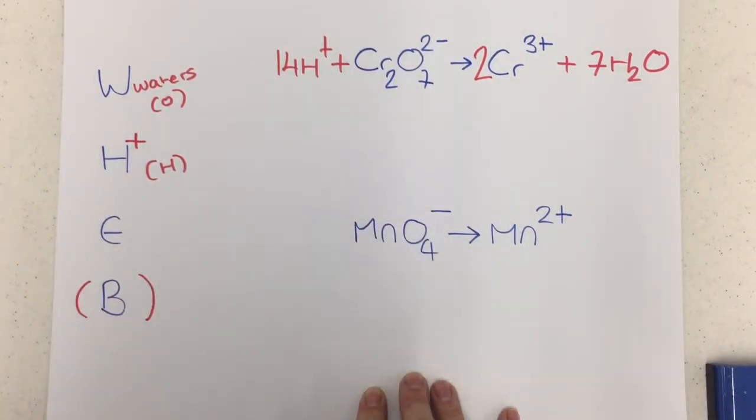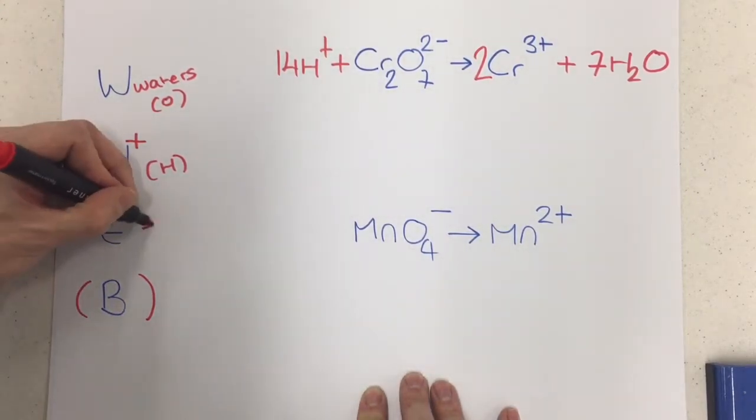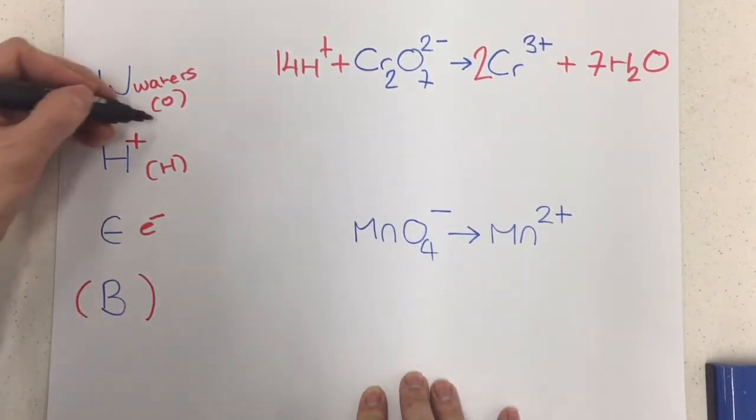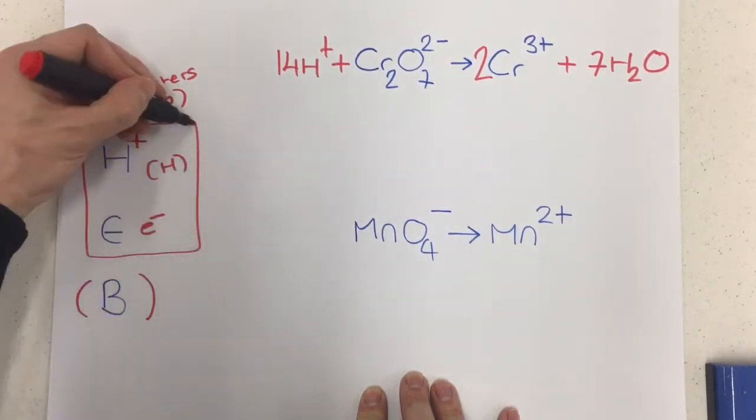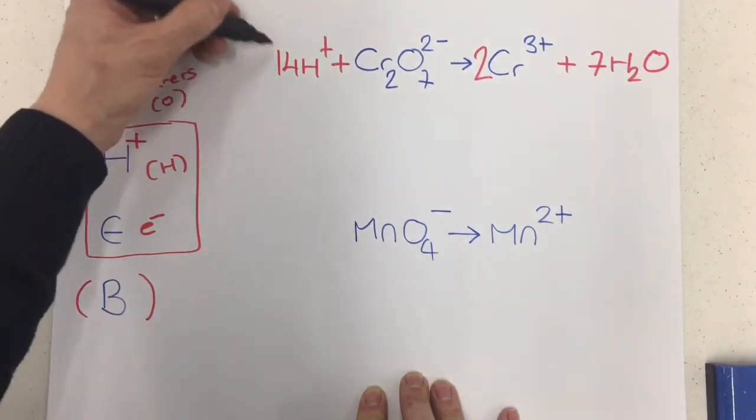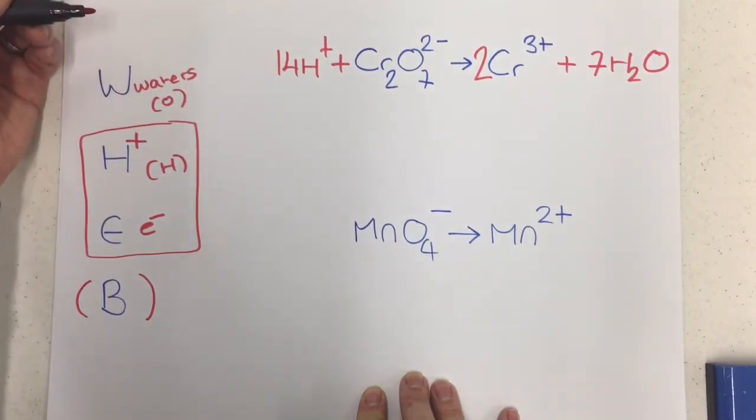The only thing that doesn't balance at the moment is the charge. And since it's a half equation, it needs to have electrons, which is exactly what the E is for down here. The electrons help us balance out the charge. And the nice thing is, the electrons always go on the same side as the hydrogen ions. And so I know they're going here, I just need to make myself vigilant for how many I'm going to need.